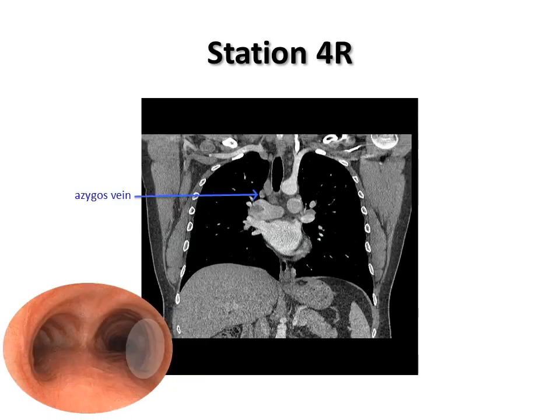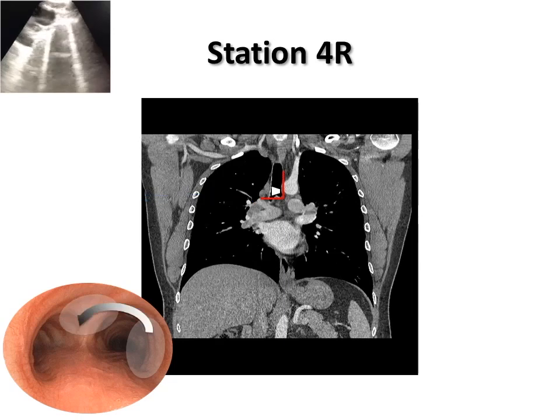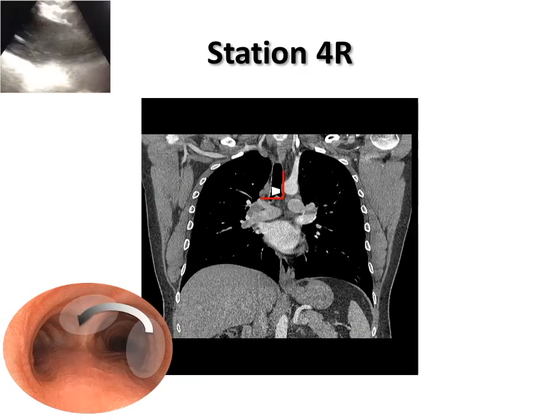Station 4R includes the right lower paratracheal nodes and the pretracheal nodes extending to the left lateral wall of the trachea. The upper border is the intersection of the caudal margin of the innominate vein with the trachea, and the lower border is the lower margin of the azygous vein. The easiest way to identify station 4R is to look for the azygous vein.